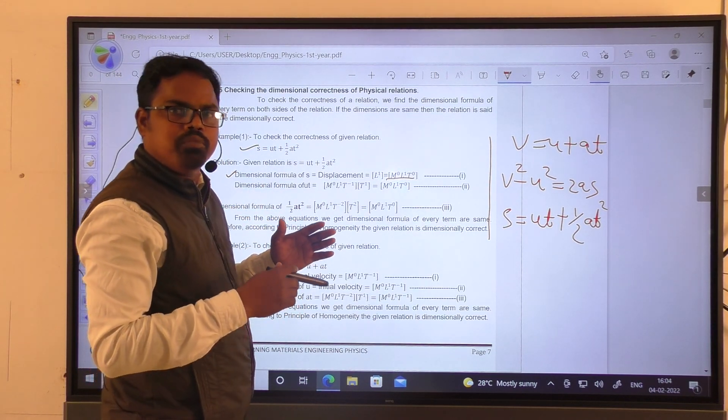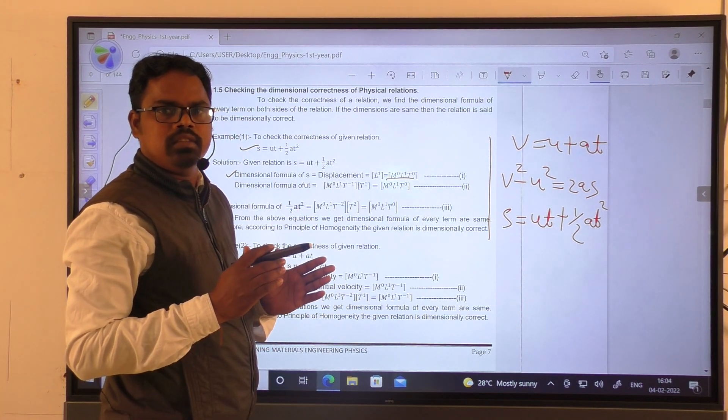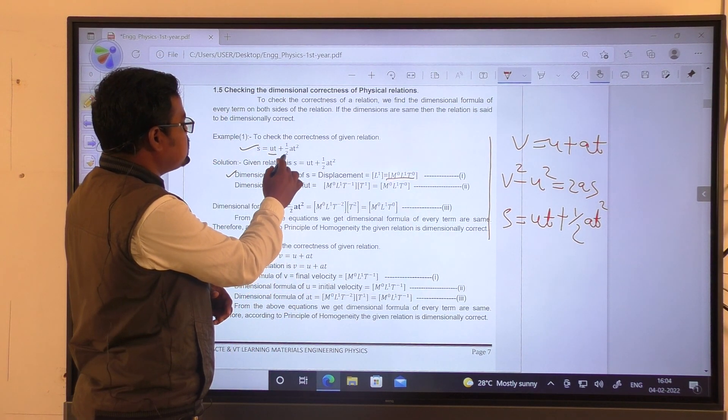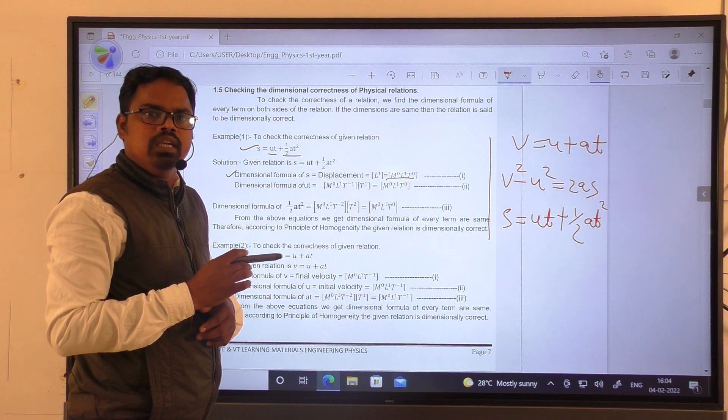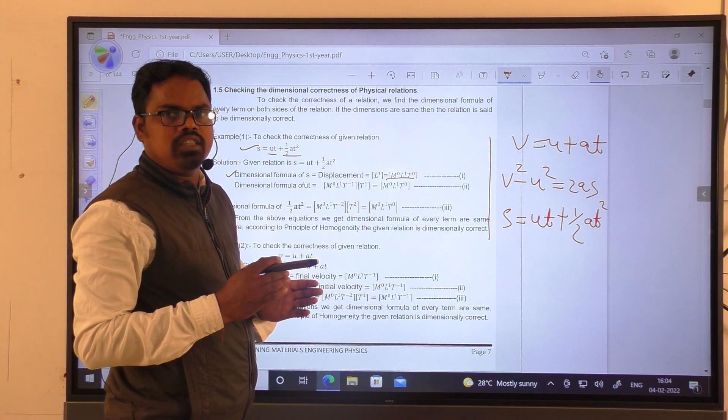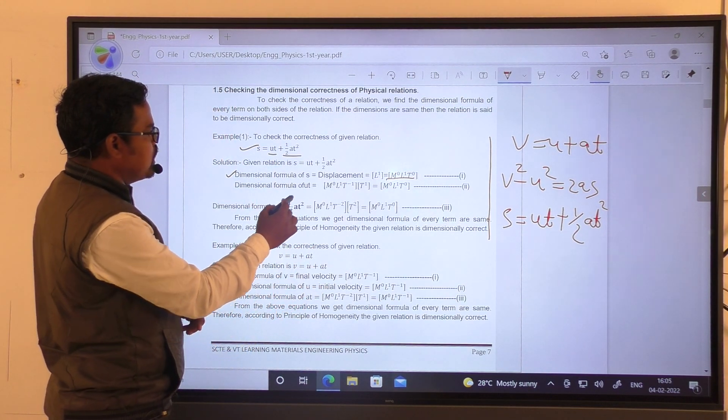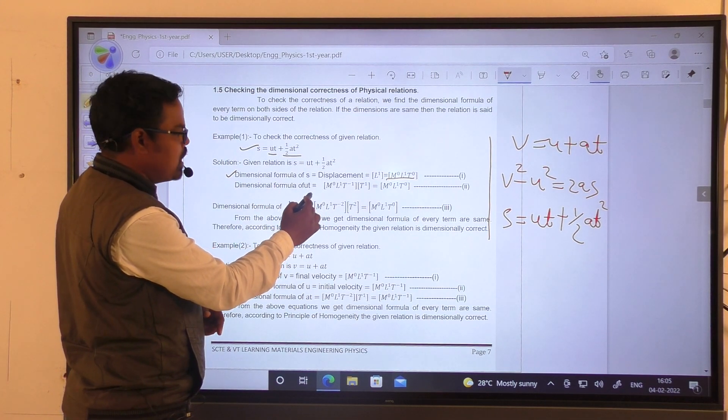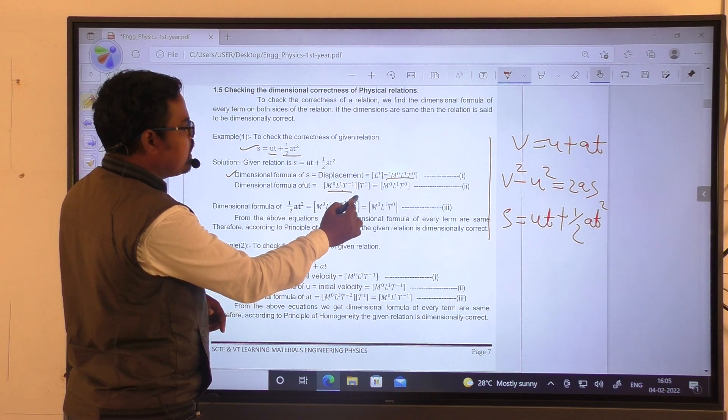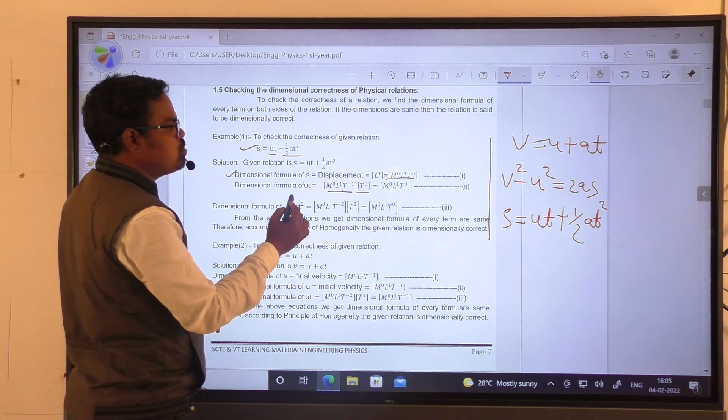Next I am going through RHS, right-hand side. On RHS there are two terms: one is ut, second one is half at square. Half itself is a non-dimensional constant. Dimensional formula of ut becomes: u is velocity M⁰L¹T⁻¹, times t. After solution we get M⁰L¹T⁰.